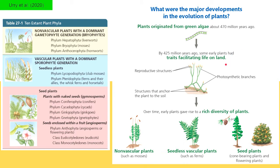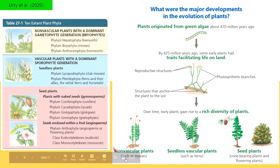What were the major developmental events that led to the evolution of plants? Scientists think that plants originated from green algae found in the sea about 470 million years ago. That green algae eventually evolved to have adaptations allowing it to colonize the land, including reproductive structures, structures for anchoring to the soil, and photosynthetic branches. That eventually gave rise to the rich diversity of plants such as non-vascular plants, seedless vascular plants, and seed plants.